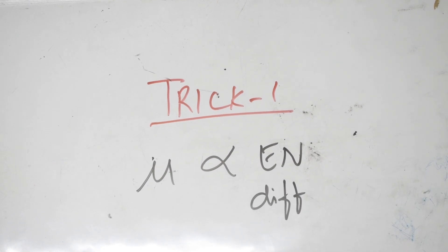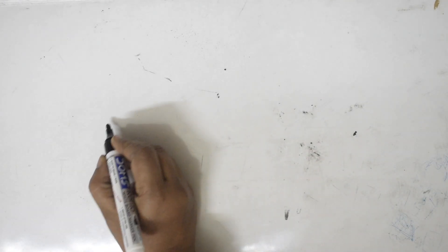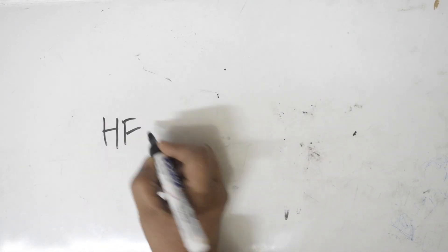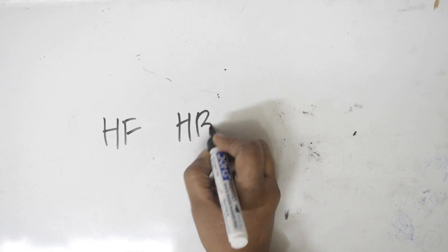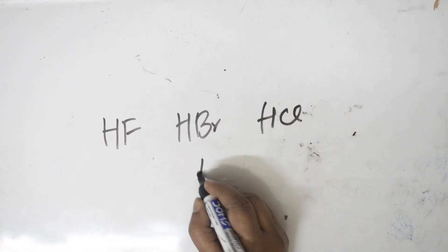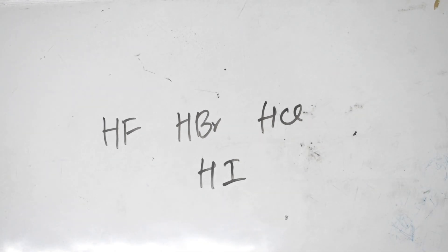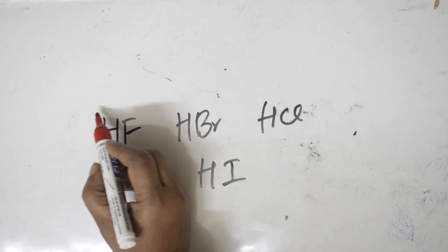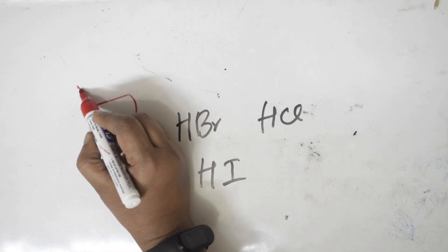That means if the difference is more between the particular two atoms attached together, then it is having more dipole. For example, if I have HF, if I have HBr, if I have HCl, if I have HI, you only tell me students, among everything the electronegativity difference is maximum in this.